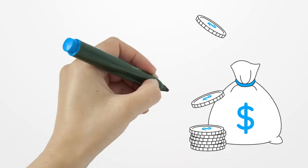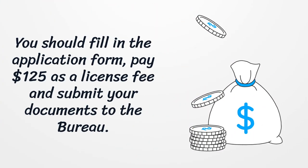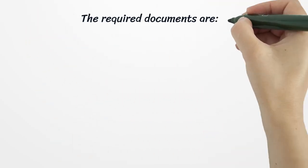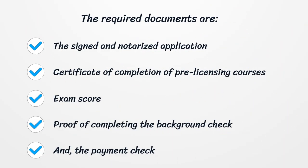You should fill in the application form, pay $125 as a license fee, and submit your documents to the Bureau. The required documents are: the signed and notarized application, certificate of completion of pre-licensing courses, exam score, proof of completing the background check, and the payment check.